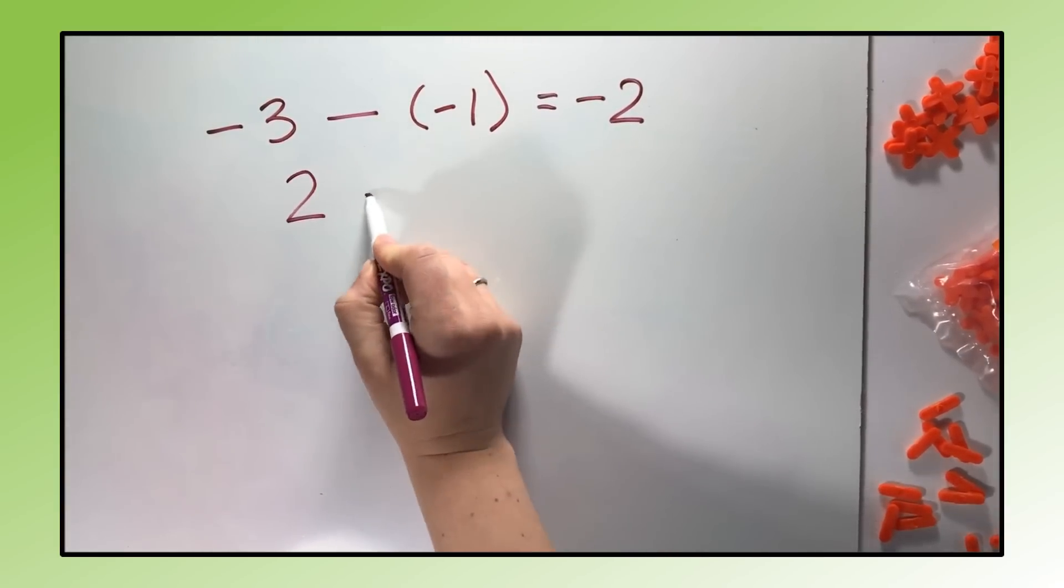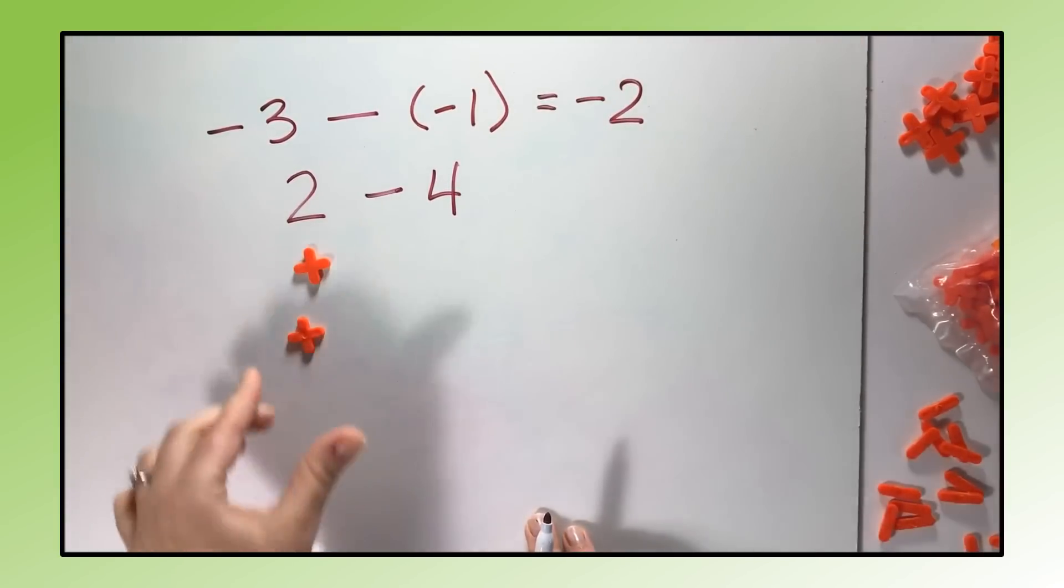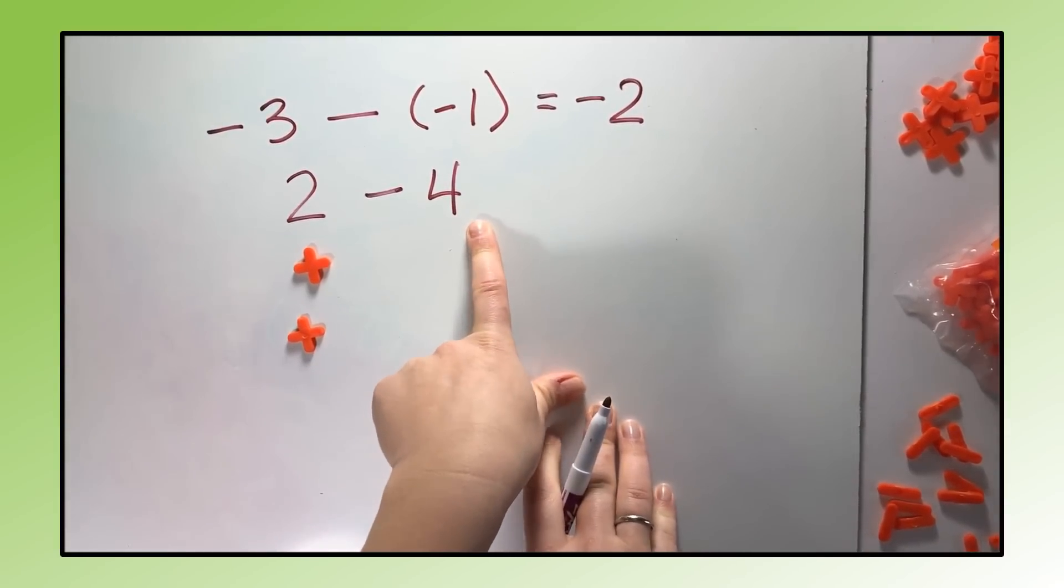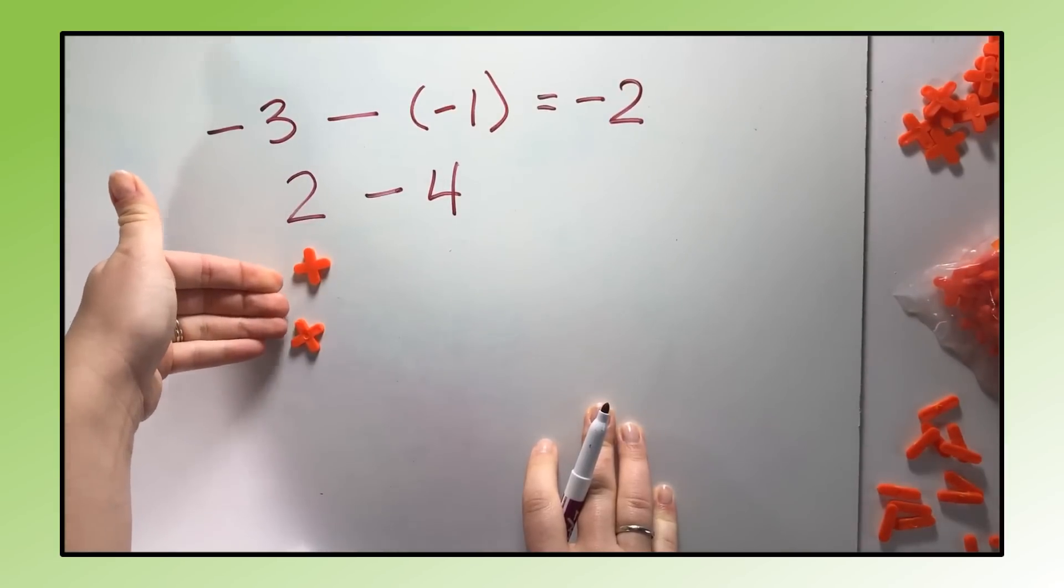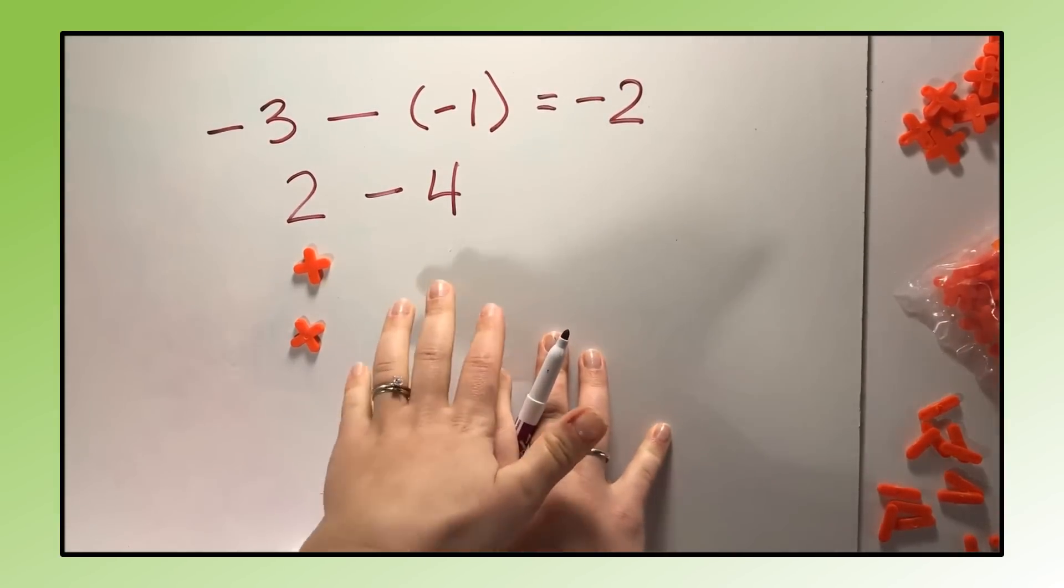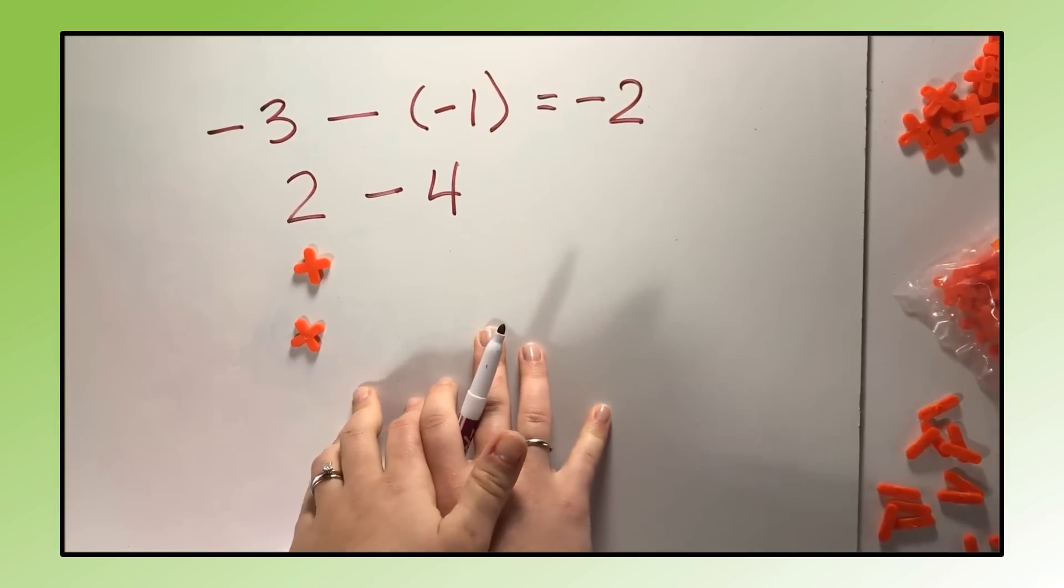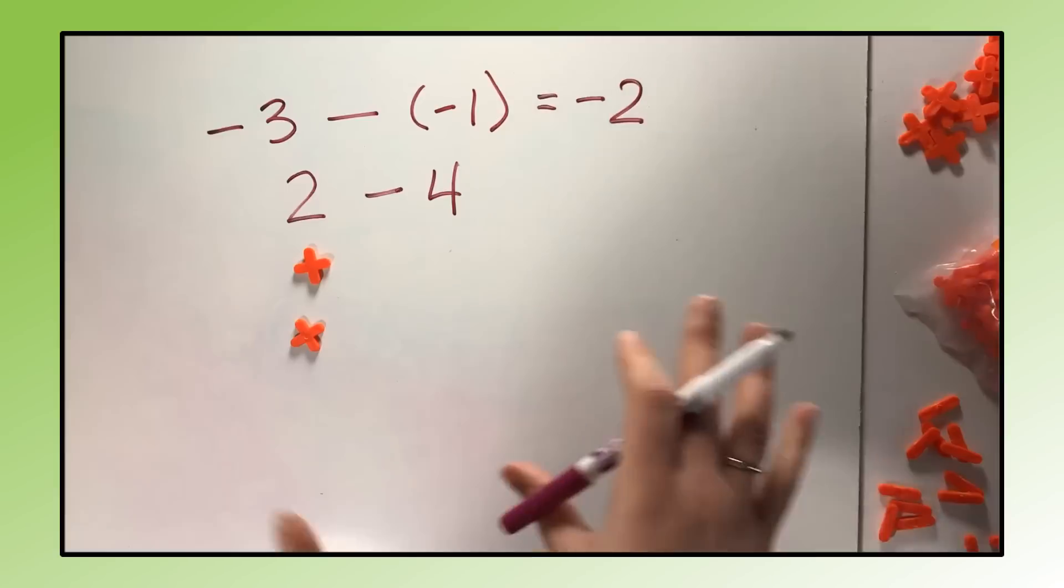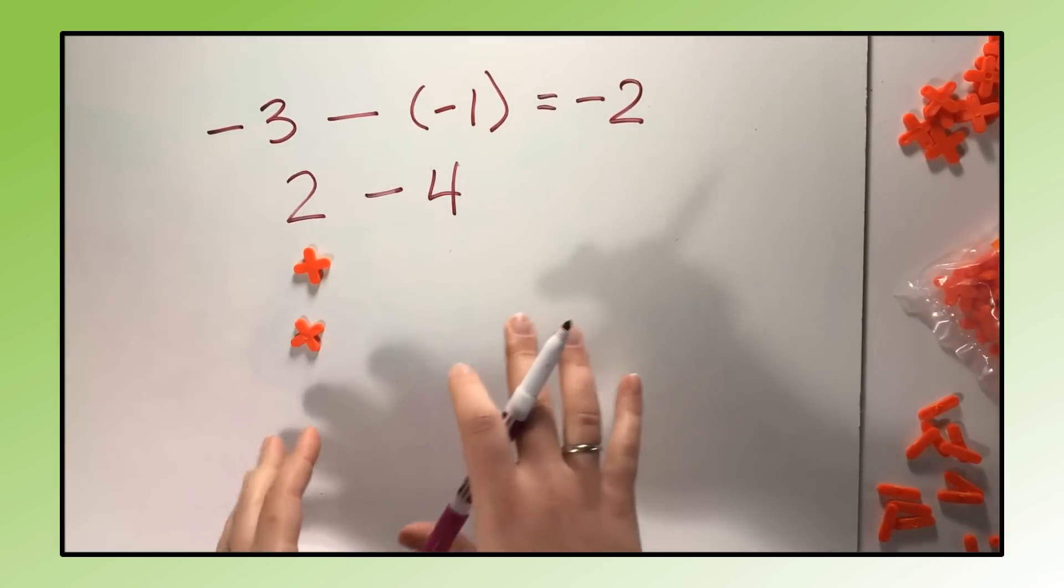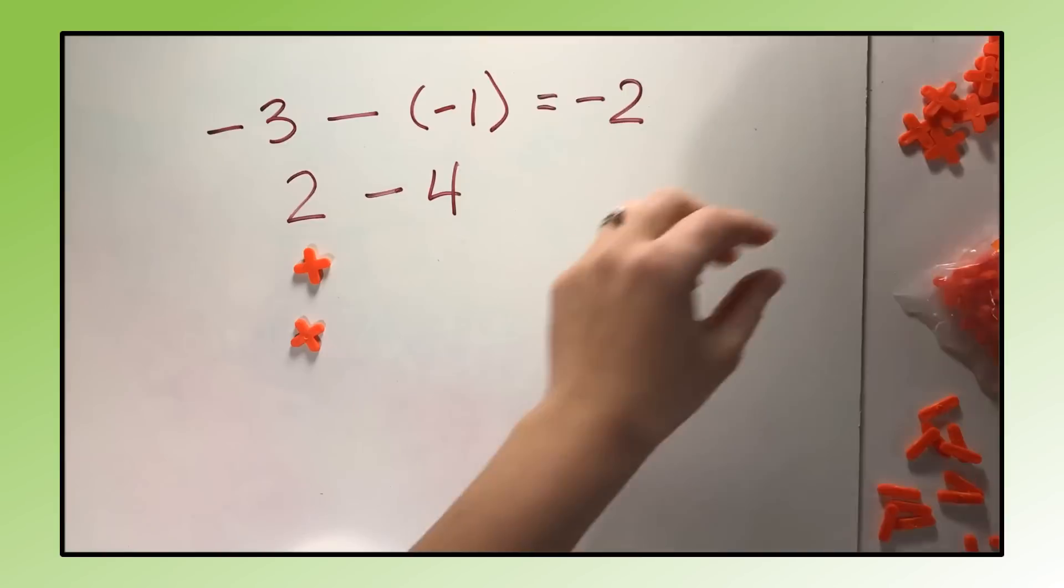Try something like two minus four. They're going to start with two positives. Now, knowing that this means take away, we would want to take away four positives. Well, we don't have four positives here to take away. But remember, we can always add or subtract zero without affecting the answer of the problem. So in this case, we're going to add zero pairs. When they were learning how to add this way, we would take away zero pairs. But now for subtracting, sometimes we need to add zero to help us understand and see and visualize this in a hands-on way.